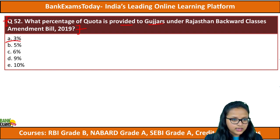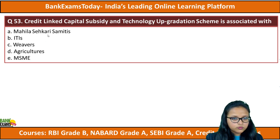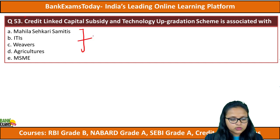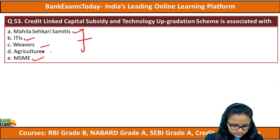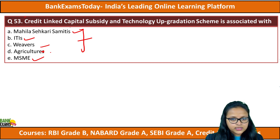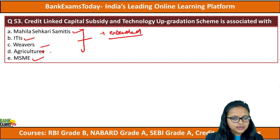The answer to question 52 is B — five percent. Now moving to question number 53: the Credit Linked Capital Subsidy and Technology Upgradation Scheme is associated with which of the following sectors? The options are Mahila Sahakari Samiti, ITIs, weavers, agriculture, and MSMEs. This scheme was recently extended — which sector is it associated with?